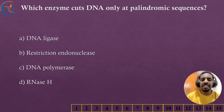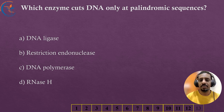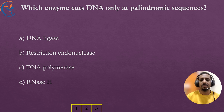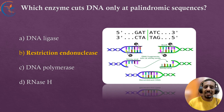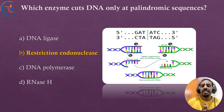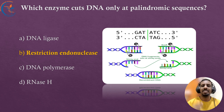Which enzyme cuts DNA only at palindromic sequences? The correct answer is restriction endonuclease. Restriction endonucleases recognize specific palindromic sequences in DNA and make precise cuts, which is critical in cloning and genetic engineering.